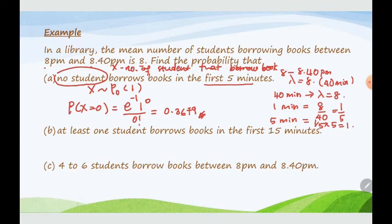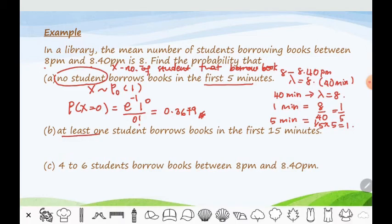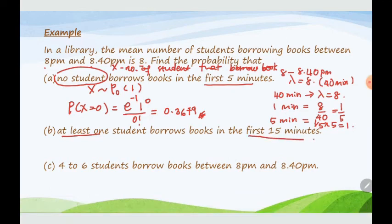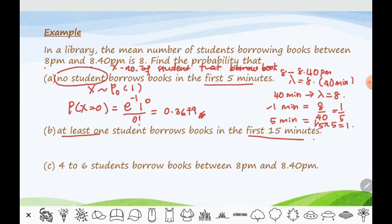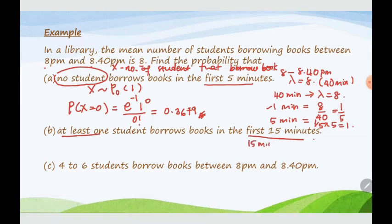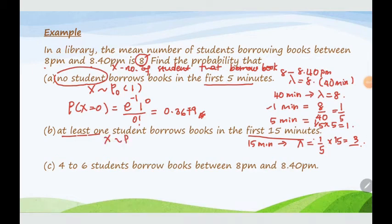For part b, at least one student borrows books in the first 15 minutes. For one minute lambda is 1/5, so for 15 minutes multiply 1/5 by 15 to get new lambda = 3. The new distribution is Poisson with lambda = 3. Find P(X ≥ 1): using the Poisson table, the answer is 0.9502.